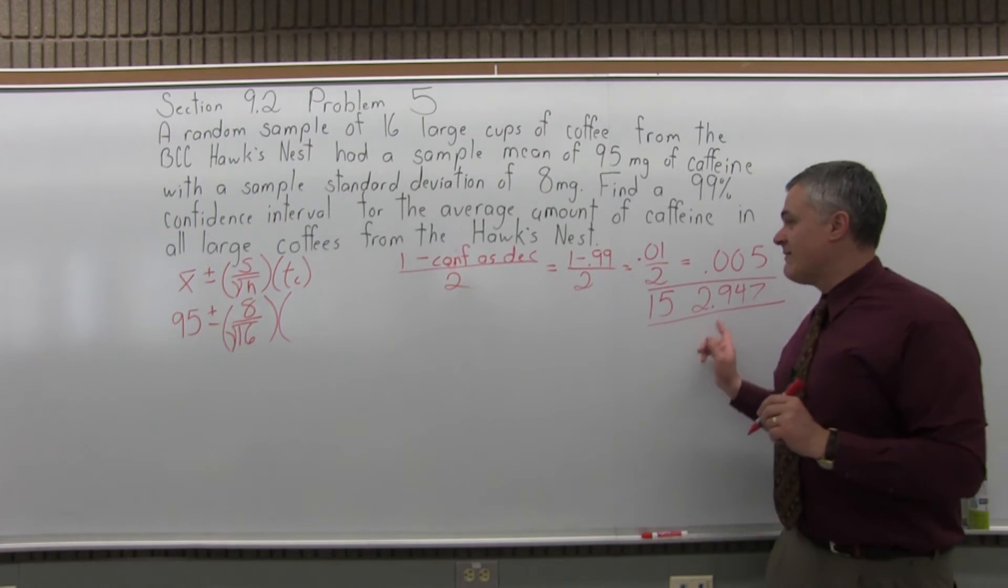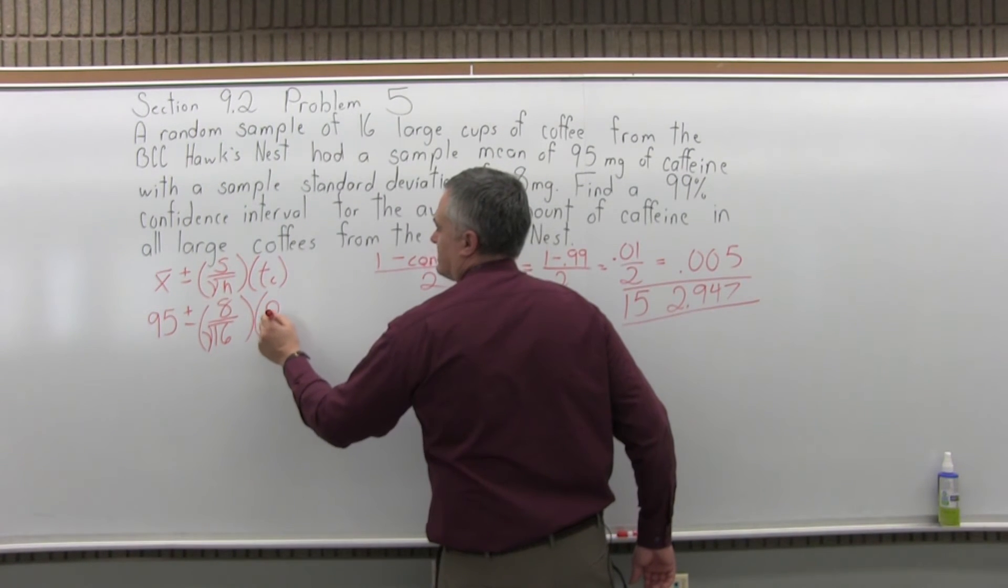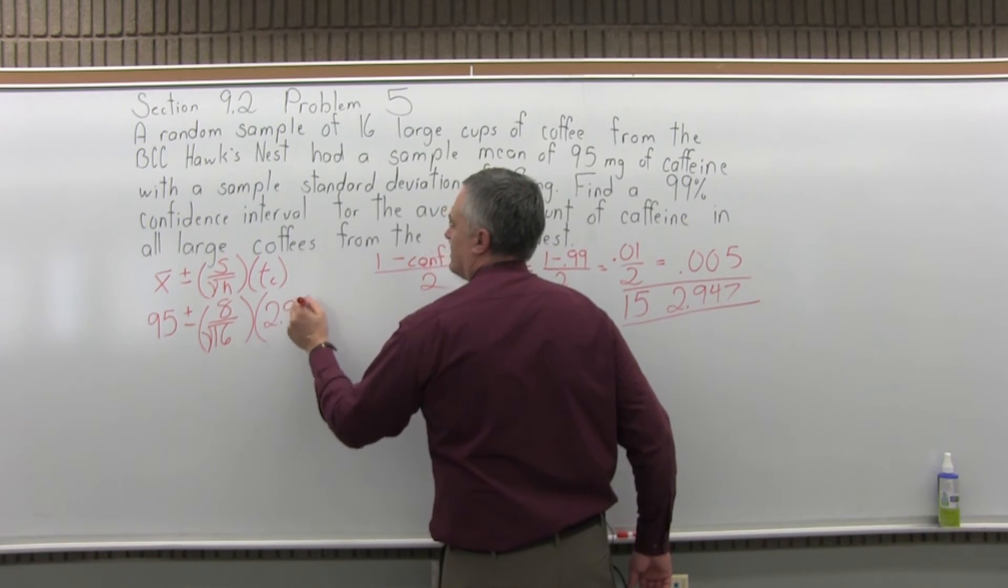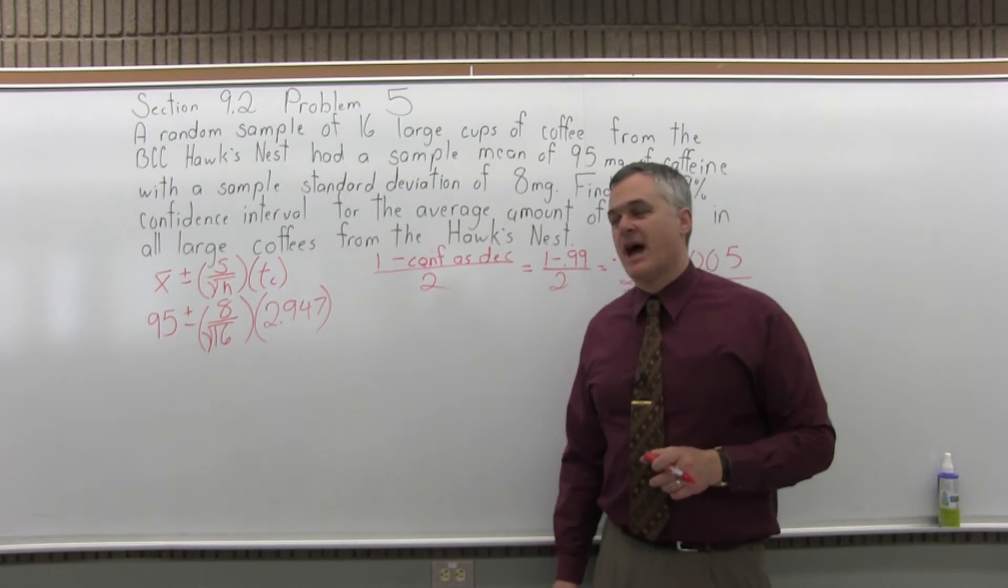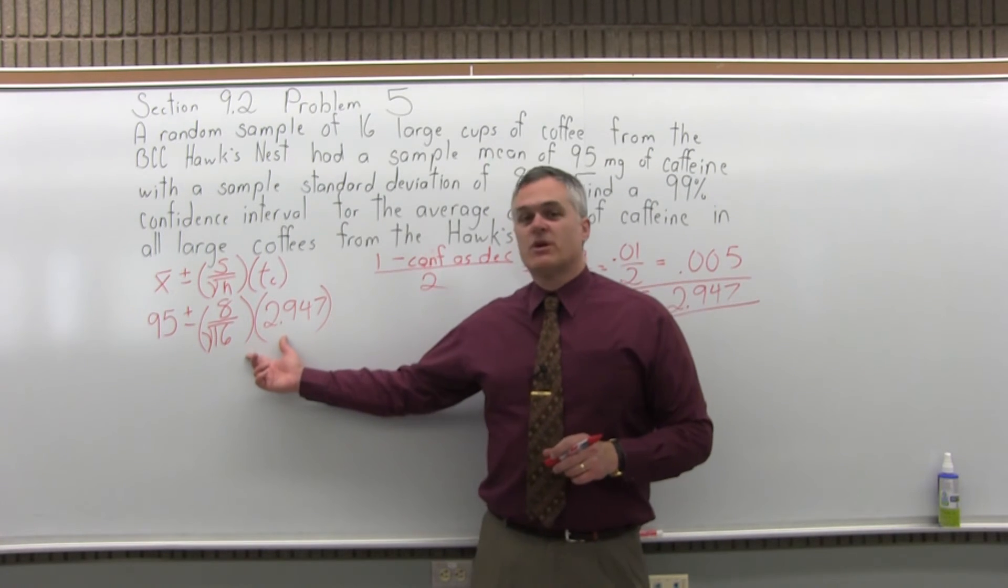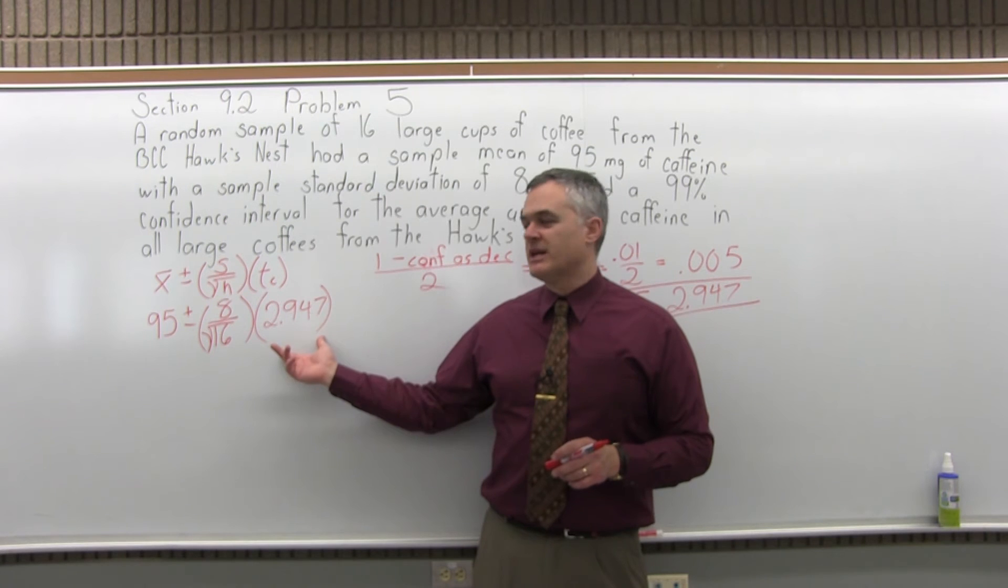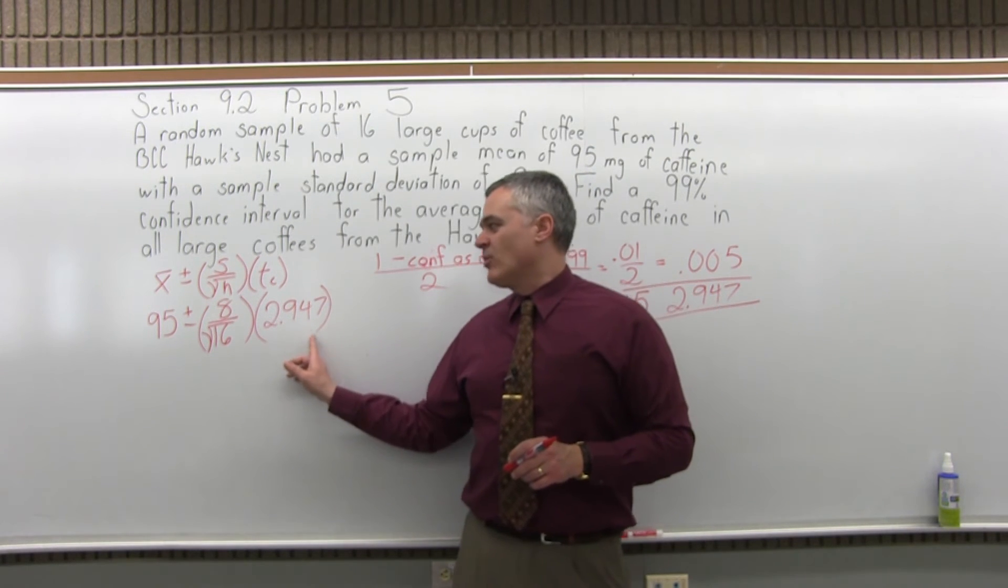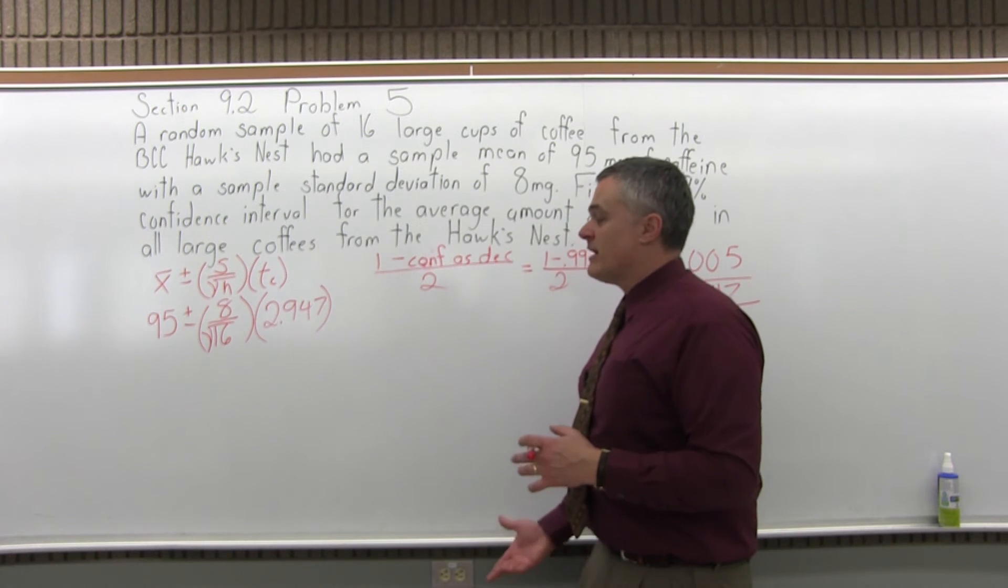So now that we have that, 2.947, that's what goes in for t sub c, our confidence coefficient. So now the formula is completely filled out. Now it's just a matter of doing the math. If you can fill in the formula correctly and you take your time, you need to use a calculator, you will most likely get the right answer. So if you make a mistake, it will probably occur up to this point.